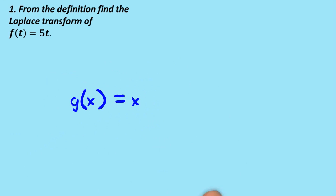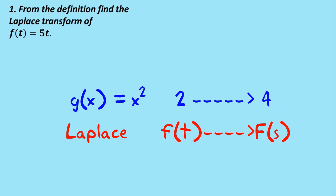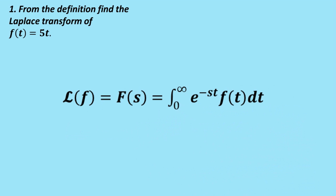A lot of times in high school you would have been used to a function, say g of x equals x squared, and that takes a number, say the number 2, and it transforms it into another number, 4. What the Laplace transform does is a little bit more complicated. It transforms a function to another function. We normally use this funny L to indicate the Laplace transform of a function f, f of t, and what we'll get out of it is this function F of s.